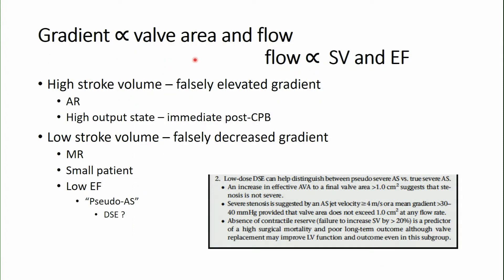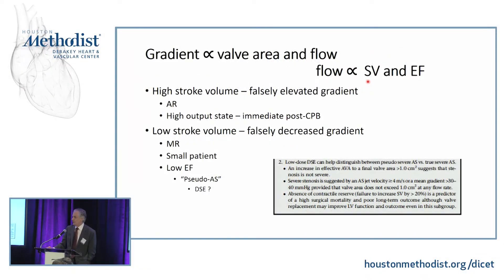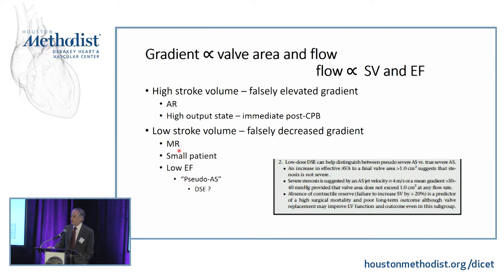Gradient is dependent on valve area and flow. Flow is dependent on stroke volume and ejection fraction. If you have a high stroke volume or high flow state — due to aortic regurgitation or a high-output state — you will falsely elevate the gradient and overestimate the degree of aortic stenosis. Similarly, in a low stroke volume state — due to a small patient, mitral regurgitation, or a low EF — you will underestimate the gradient and underestimate the degree of aortic stenosis.